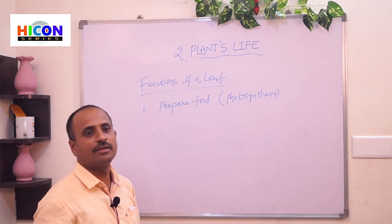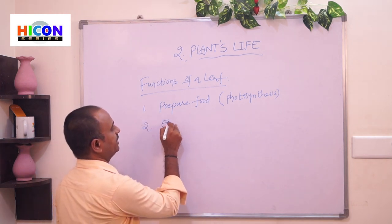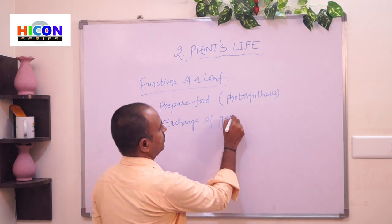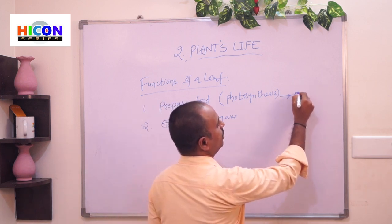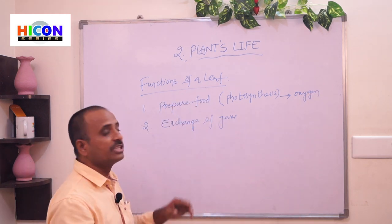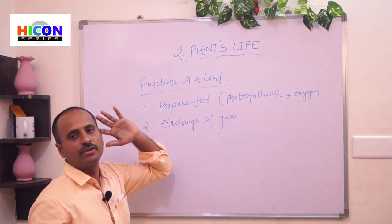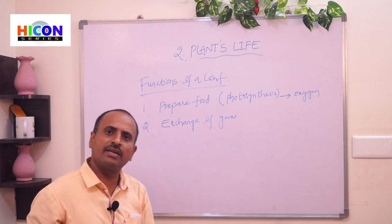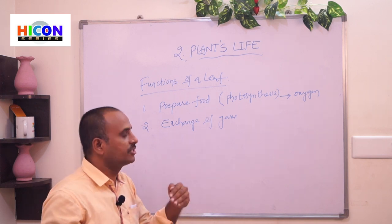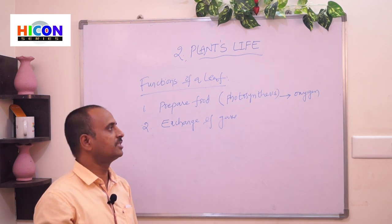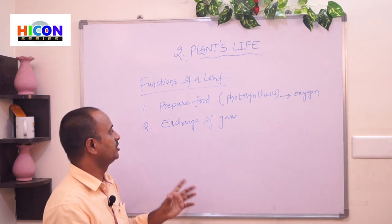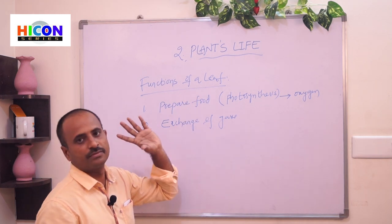The second function of the leaves is the exchange of gases. During photosynthesis, leaves give off oxygen into the atmosphere through the stomata. Carbon dioxide enters into the plant and oxygen goes out to the atmosphere — this is the exchange of gases through the stomata of the leaves.